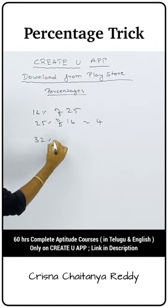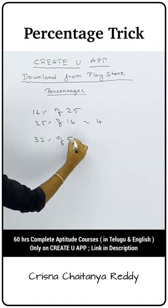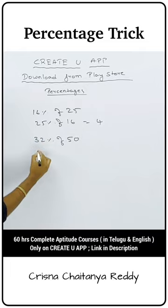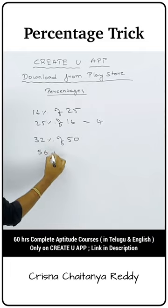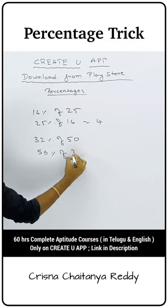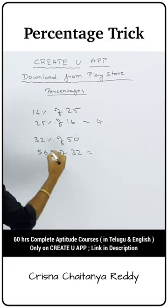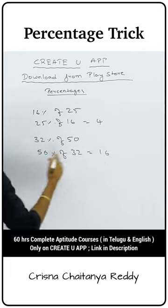That means you can also get 32% of 50 by flipping it to 50% of 32. And 50% of 32 means 16.